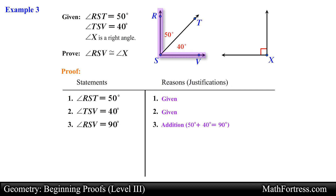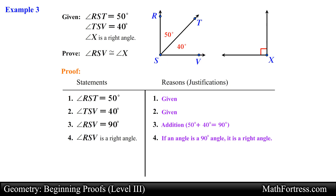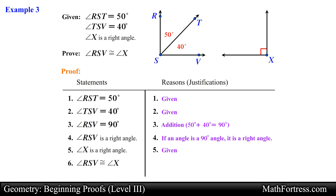Now that we have established the fact that angle RSV measures 90 degrees, we can write angle RSV as a right angle. The reason is because of the definition of right angles — if an angle is a 90-degree angle, it is a right angle. Now let's write the statements for angle X. We know that angle X is a right angle and the reason is because it is given. Finally, we can conclude that angle RSV is congruent to angle X because of the right angles theorem, which states that if two angles are right angles then they are congruent. And this ends the proof.